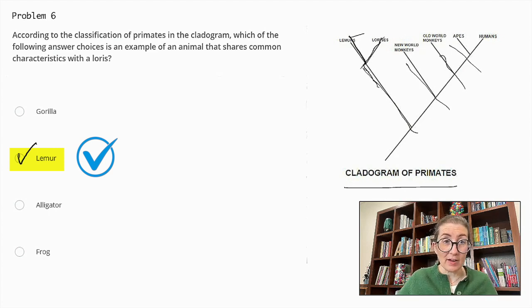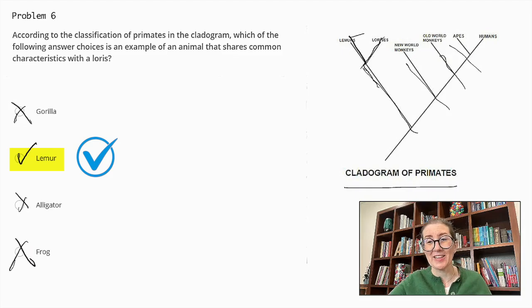Why are the others not correct? Gorillas are apes, so it's a more distantly related branch. Alligators are reptiles, not primates. And frogs are amphibians and even more distantly related. Thus the lemur shares common characteristics with a loris according to the classification shown in the cladogram.